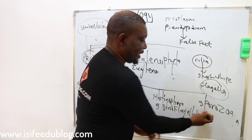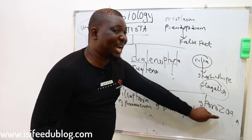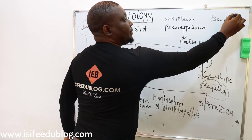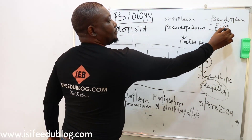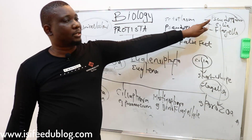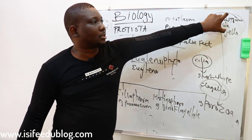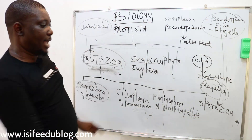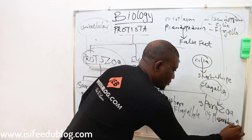The last class is Sporozoa. The Sporozoa are members that don't have pseudopodia, cilia, or flagella — all structures for locomotion are absent in this class, so there is no structure for movement. A typical example of this class of protozoa is Plasmodium.